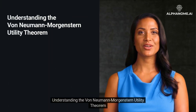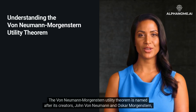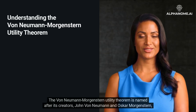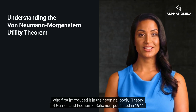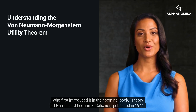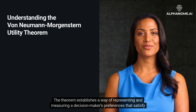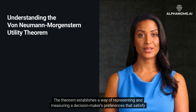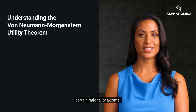Understanding the Von Neumann-Morgenstern Utility Theorem. The VNM Utility Theorem is named after its creators, John Von Neumann and Oscar Morgenstern, who first introduced it in their seminal book, Theory of Games and Economic Behavior, published in 1944. The theorem establishes a way of representing and measuring a decision-maker's preferences that satisfy certain rationality axioms.